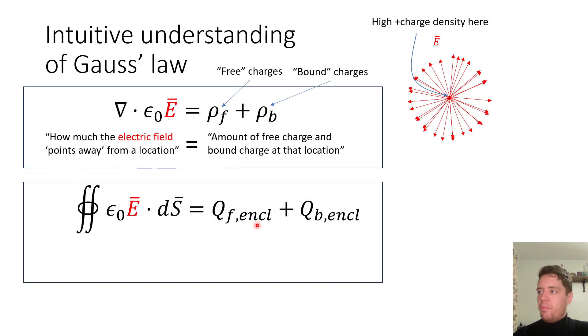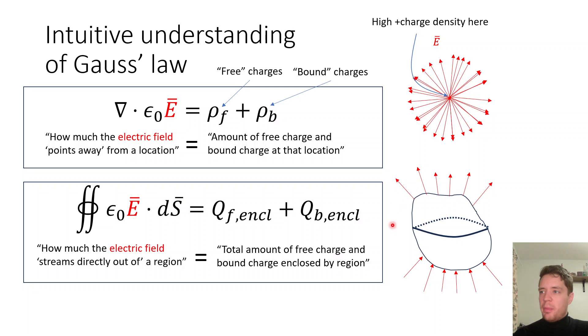Furthermore, if we consider the integral formulation of the same law, it's saying that how much the E-field lines are streaming out of some given enclosed region must depend on the total amount of charge inside both free and bound. For example, if we consider this bubble right here, and notice that we have as many E-field lines streaming into the bubble as we have streaming out, we know that the total charge inside must add up to zero.